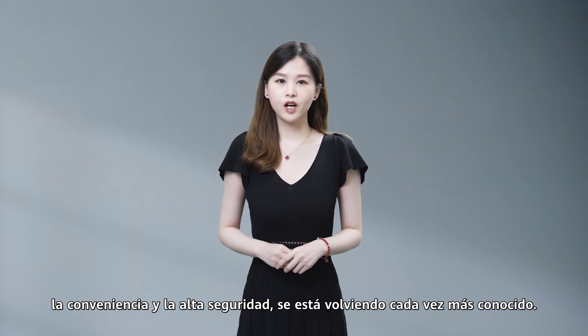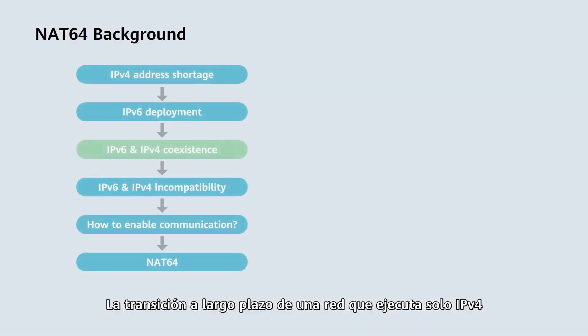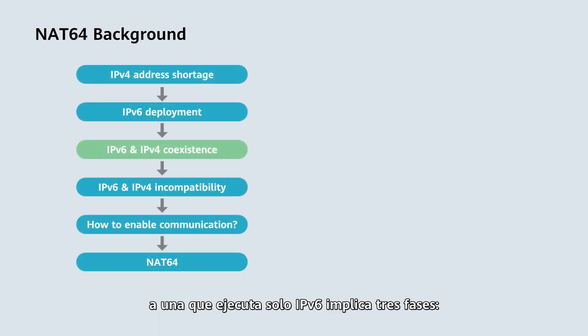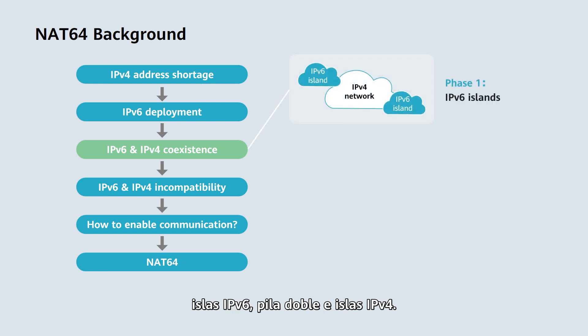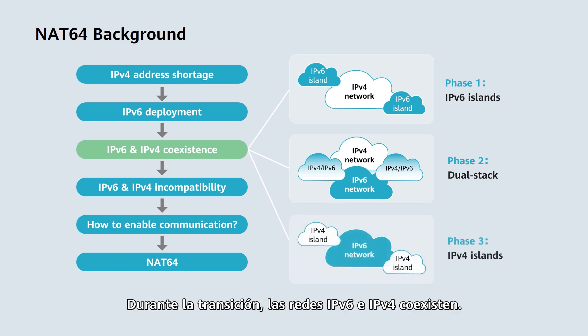The long-term transition from a network running only IPv4 to one running only IPv6 involves three phases: IPv6 islands, dual stack, and IPv4 islands.